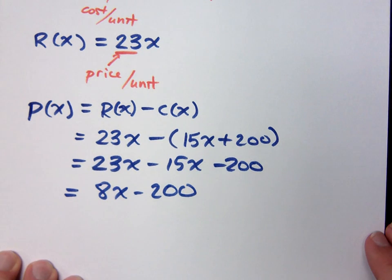that's 23X minus the quantity 15X plus 200. So, when you work this out, 23X minus 15X minus 200, which gives you 8X minus 200. So, this is a function that represents the profit for what it is that I'm working on.